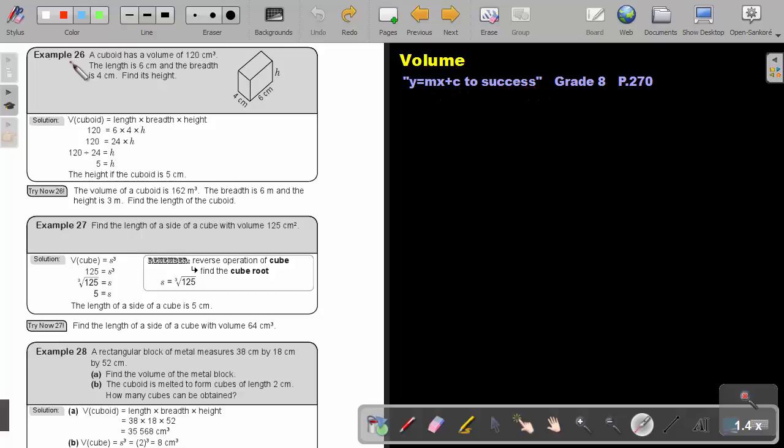Let's look at example 26. A cuboid has a volume of 120 cubic centimeters. The length is 6 centimeters and the breadth 4. Find its height.